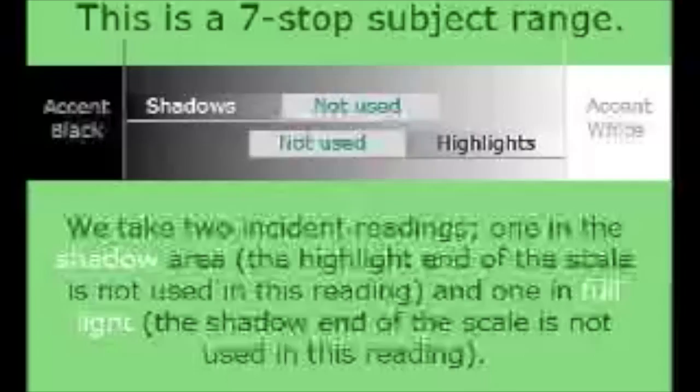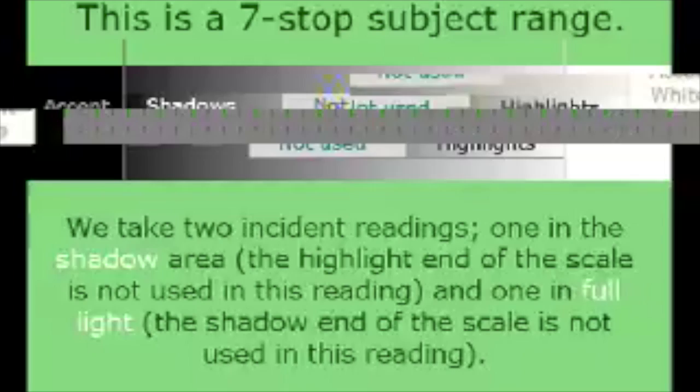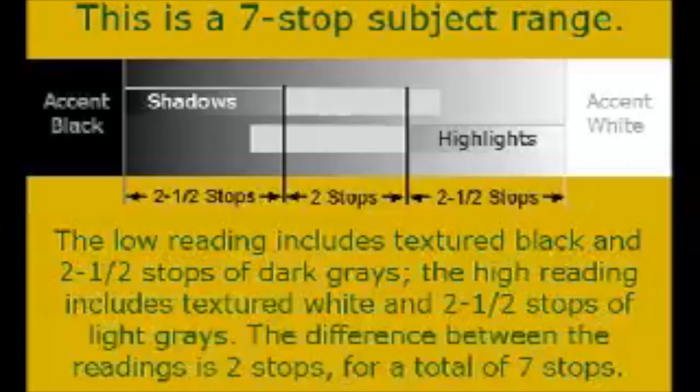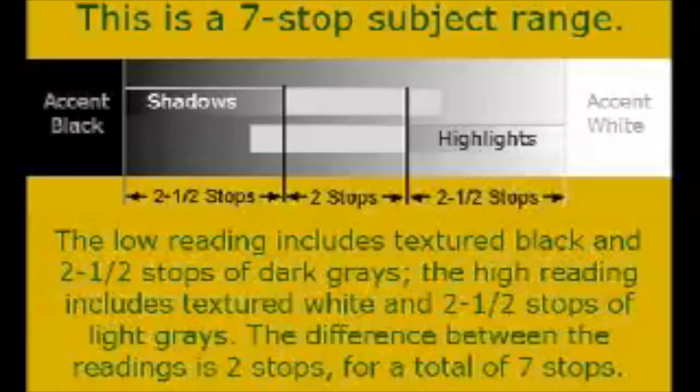This is the method we use to measure the subject luminance range with an incident meter. We essentially split the meter's range in half and take two incident readings — one in a shadow area of the subject and one in full light. The highlight half of the shadow reading and the shadow half of the highlight reading are ignored. The low reading includes textured black plus 2 and a half stops of dark gray, and the highlight reading includes textured white plus 2 and a half stops of light gray.